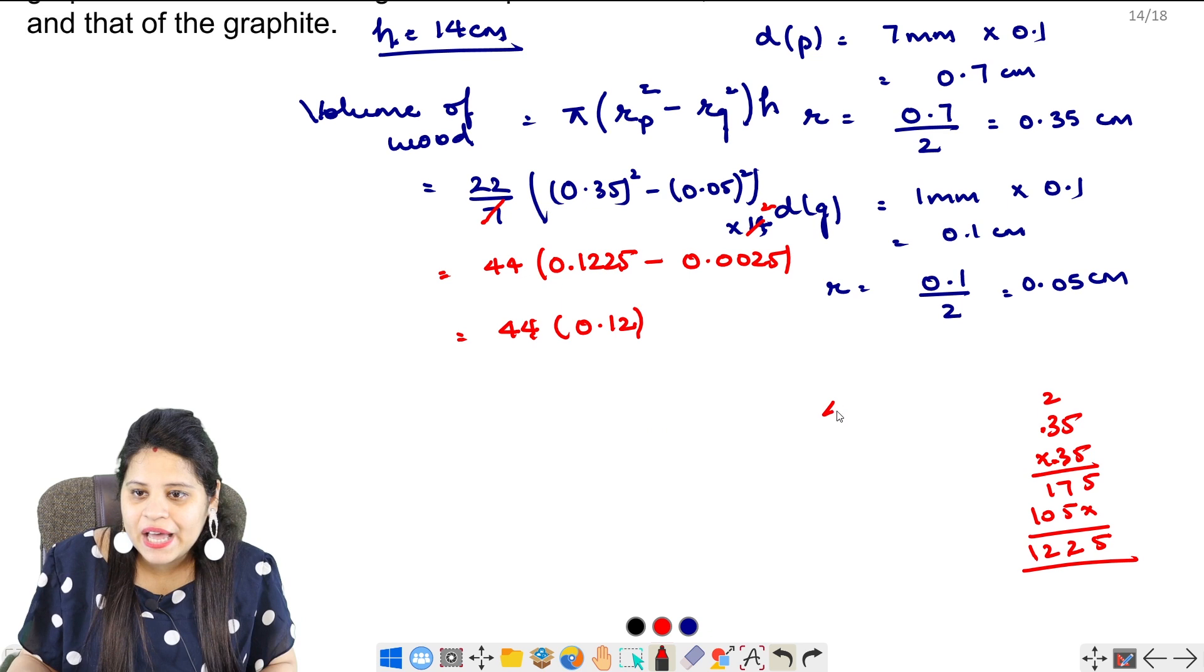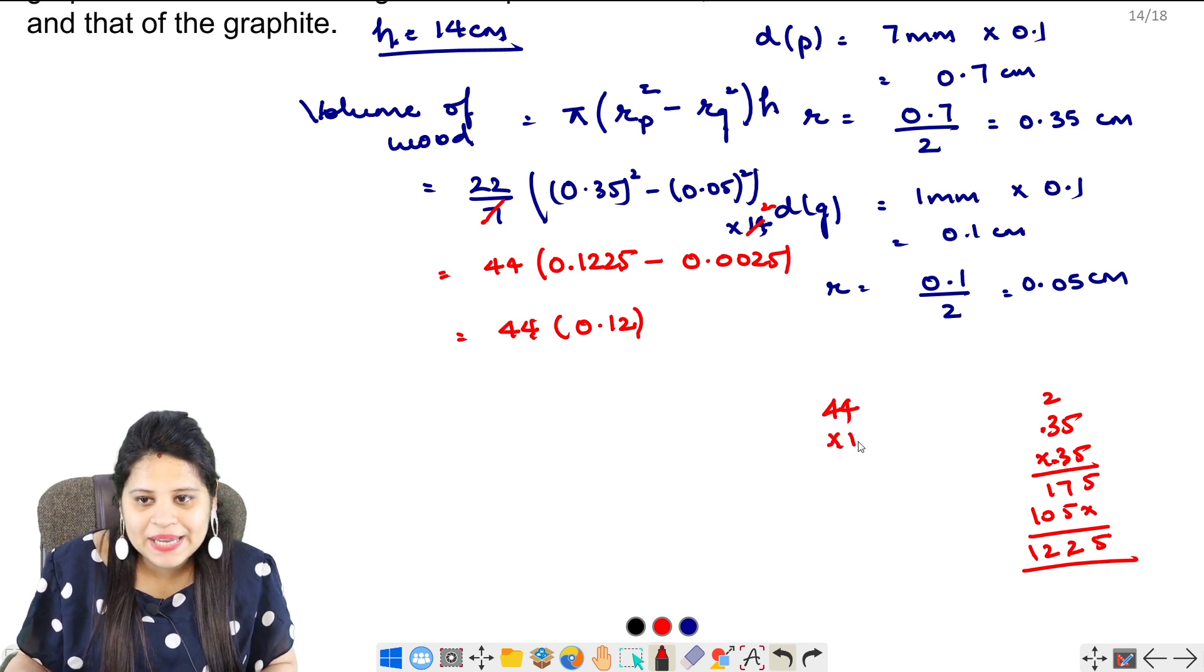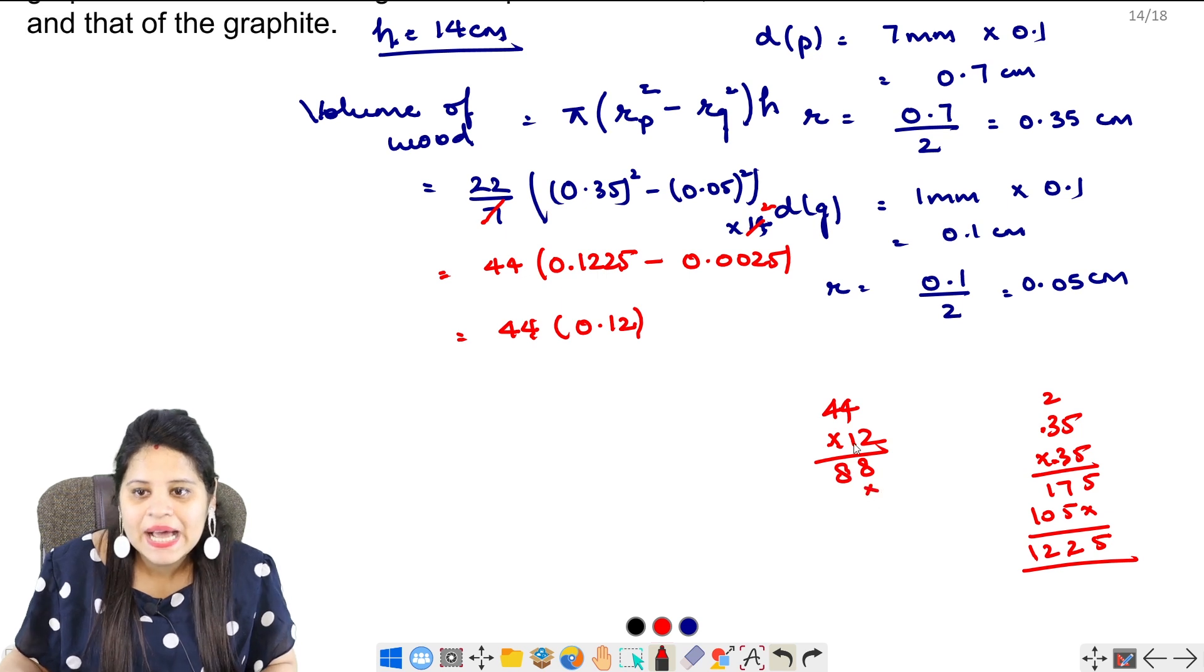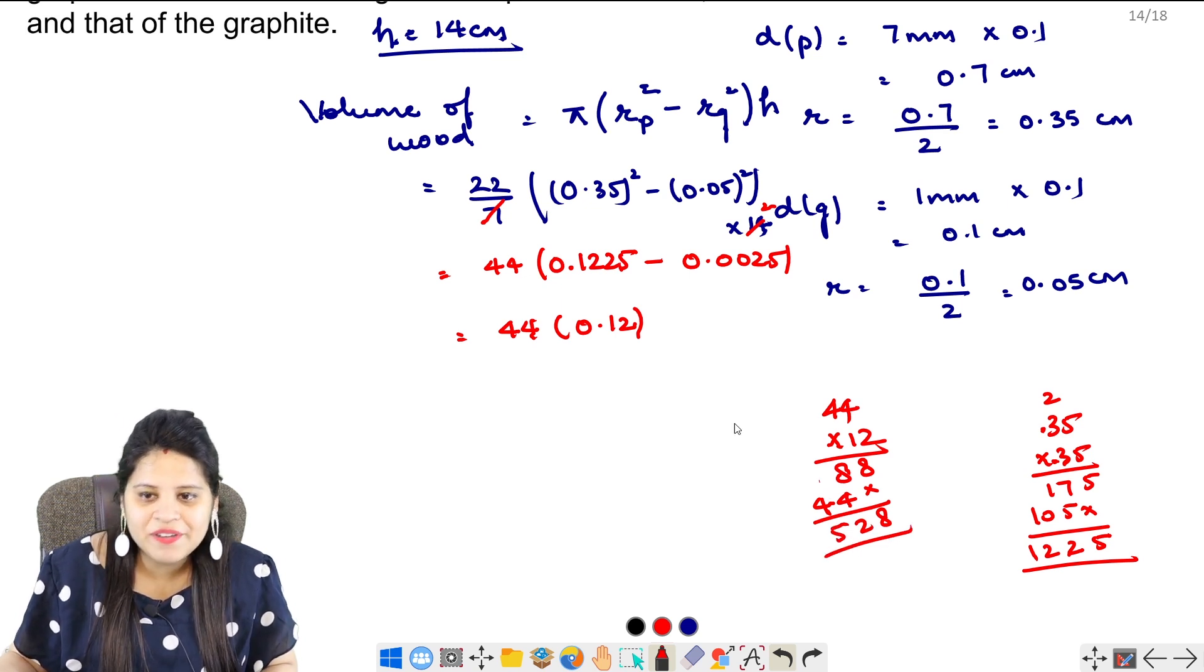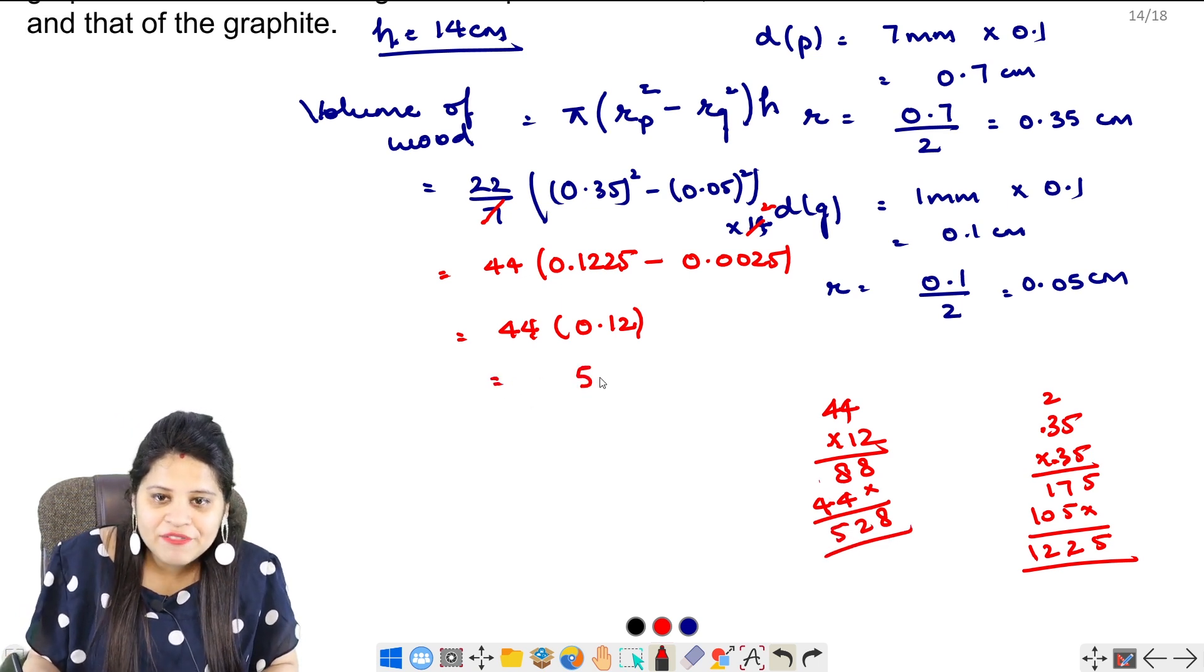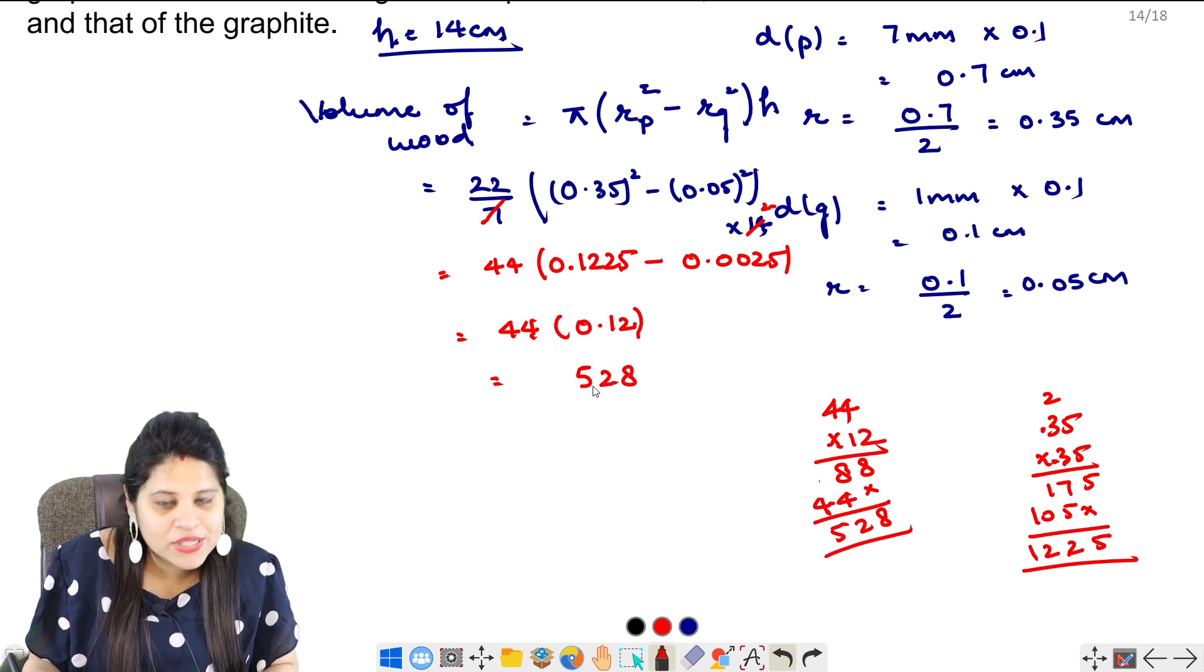So we will have 44 multiply by 12. 4, 2 is 8, 4, 2 is 8. Again, 4, 1 is 4, 4, 1 is 4. So this is 8, 9 and 11 is 12. And 4 plus 1 is 5. So we have to add 5, 28.